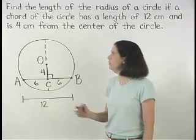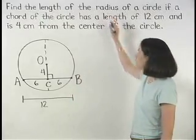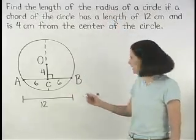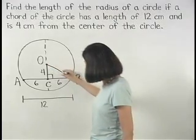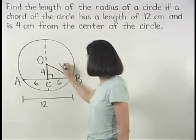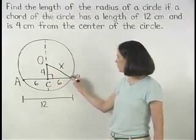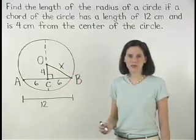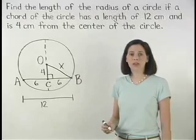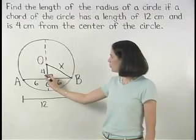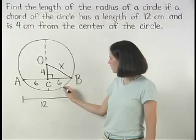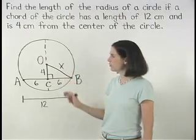Now to find the radius of the circle, let's draw radius OB and give it a length of X. Notice that right triangle OCB is formed, so we can use the Pythagorean theorem to set up the equation 4 squared plus 6 squared equals X squared.